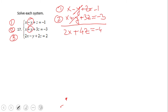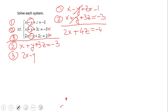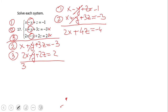We can do the same thing with equation two and three. We add them because again we see positive y in equation two and negative y in equation three. Adding them, the y cancels out and we end up with 3x plus 5z equals negative one.